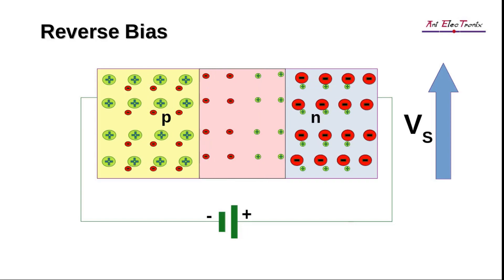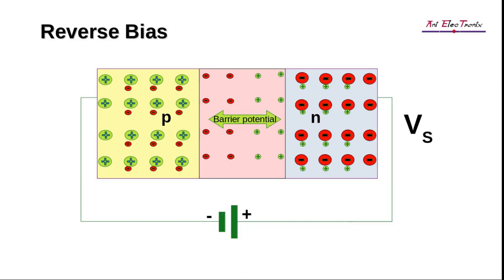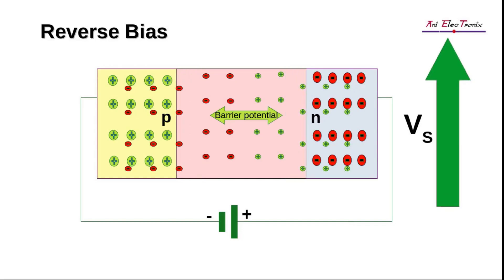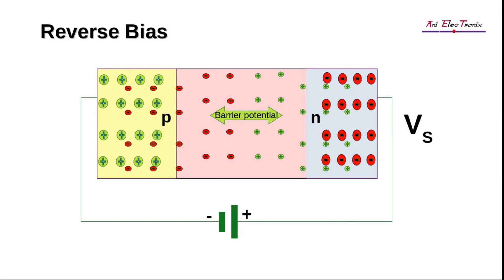This pushes holes and electrons towards the negative and positive sides of the source terminal, therefore increasing the width of the barrier potential. Increased source voltage will widen the barrier potential. As a result, we can determine the width of the depletion region to be directly proportional to the source voltage. Once the barrier potential equals the applied constant reverse bias voltage, the width of the depletion region stops increasing, and electrons and holes cease to move towards the source terminals.